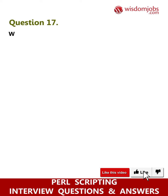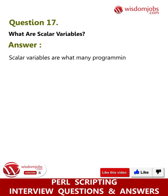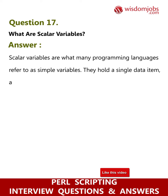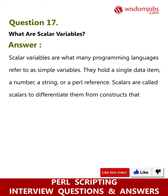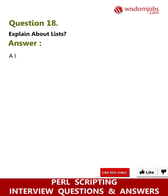Question 17: What are scalar variables? Answer: Scalar variables are what many programming languages refer to as simple variables. They hold a single data item — a number, a string, or a Perl reference. Scalars are called scalars to differentiate them from constructs that can hold more than one item, like arrays.